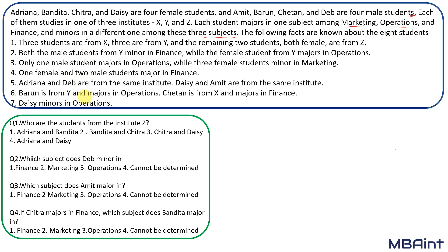Let's read the facts so we get a rough idea about how to draw the table. The first information says that three students are from X, three from Y, and the remaining two students — both female — are from Z. So institute X has three students, institute Y has three students, and institute Z has two students, and both of them are female.